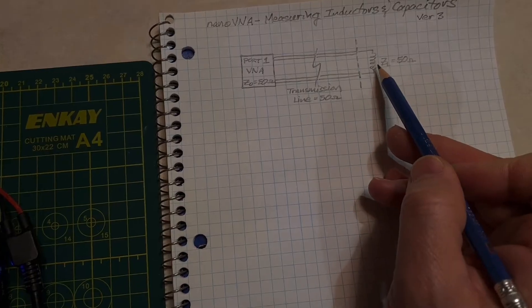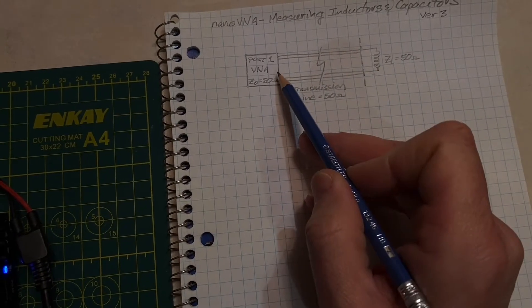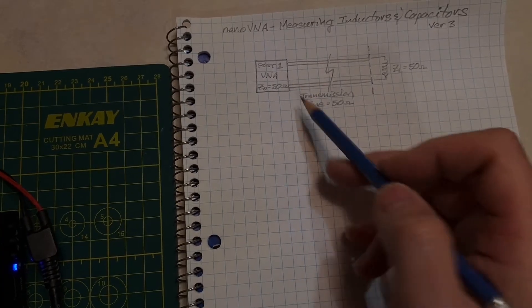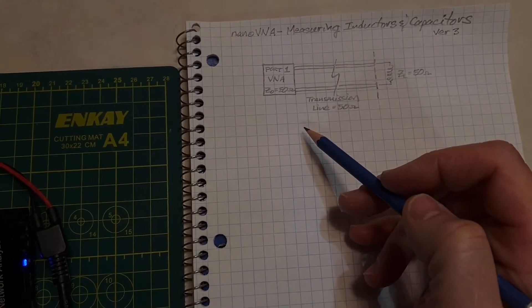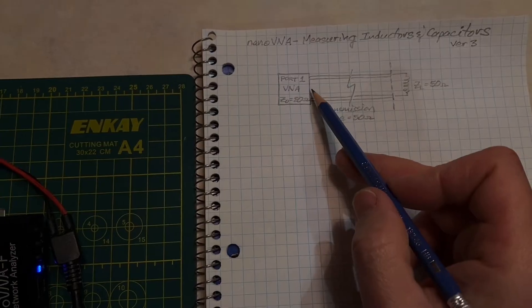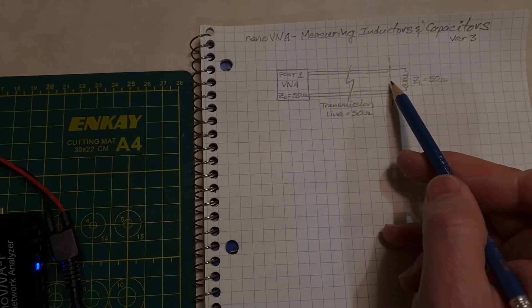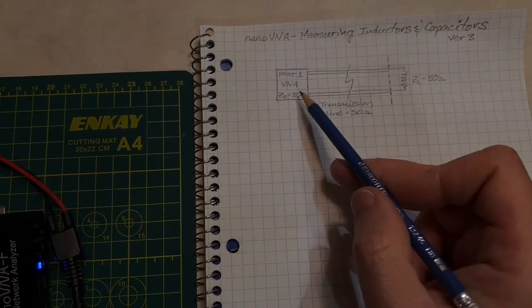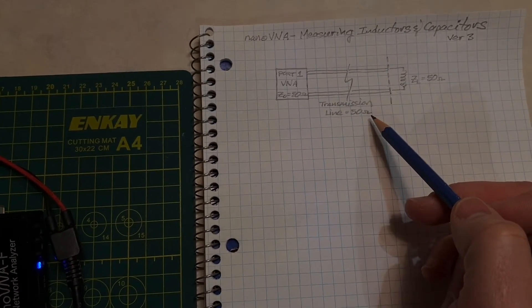The VNA sends a stimulus wave down to the device under test and then looks at what's coming back. It's looking at the amplitude and phase of the difference between the stimulus and reflected waves, and from that the VNA is able to determine all of its information.